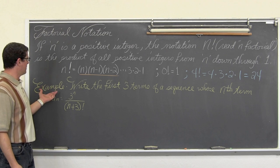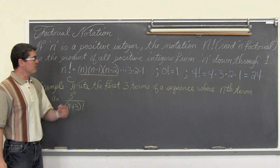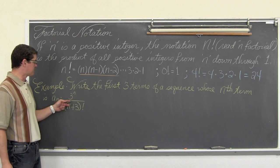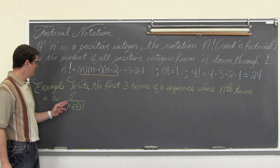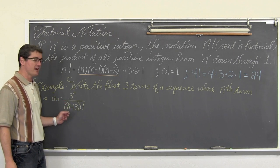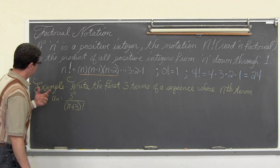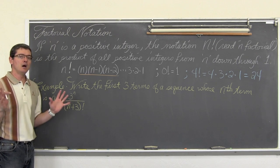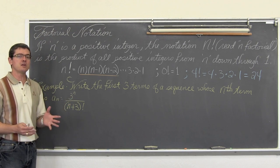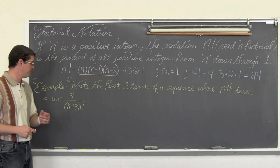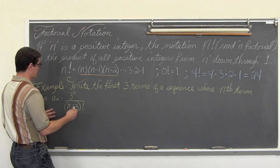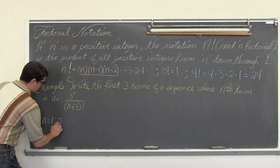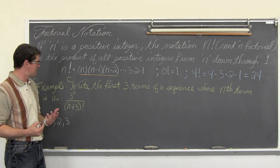Our first example is: write the first three terms of a sequence whose nth term is a sub n equals three to the n power over n plus three factorial. Our precalculus book is introducing the factorial notation with the introduction of sequences. We are going to find the first three terms by letting n equal one, two, and then three.